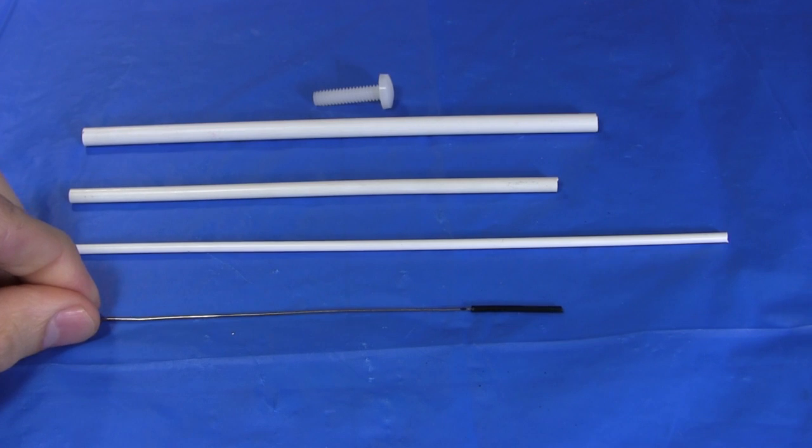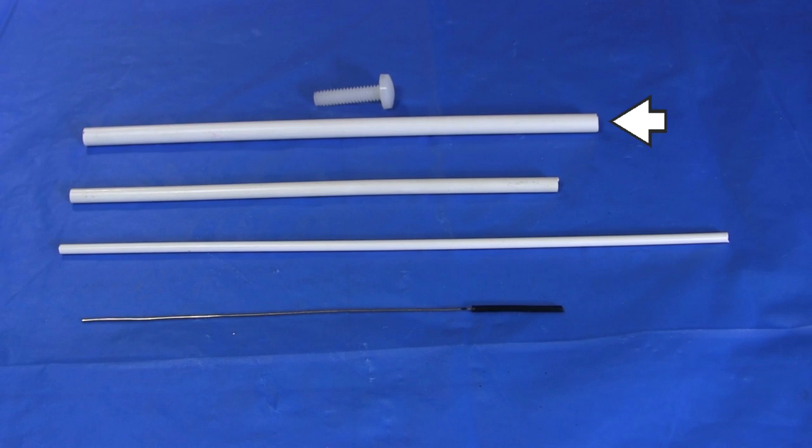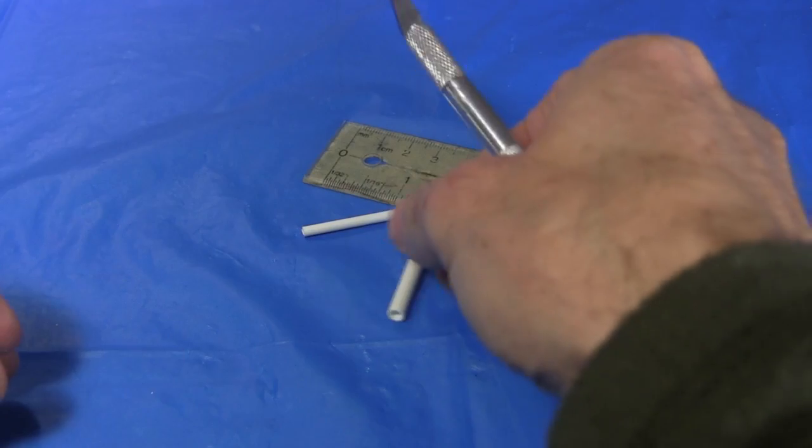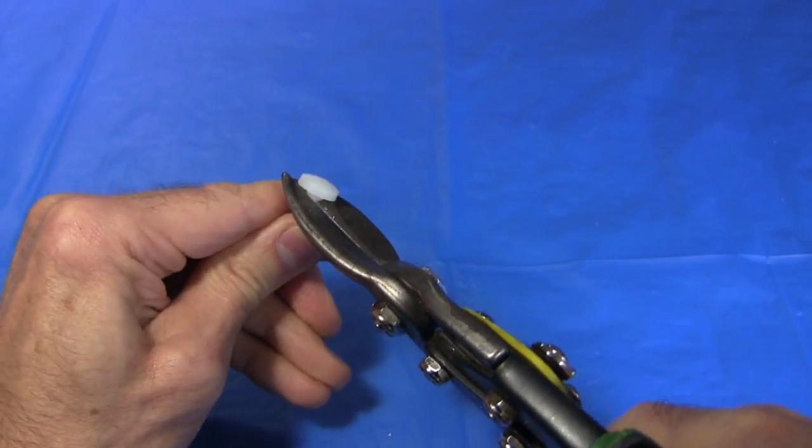Last part to attach to the outside of the head, is this other antenna. To make it, I have a nylon bolt, a bunch of plastic tubes that fit into each other, and a steel wire with some insulation from a black wire on one end. I start by cutting the tubes to various lengths. And then cutting the head off the bolt.